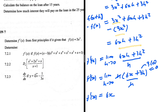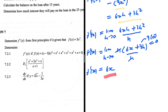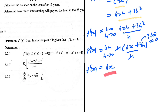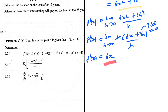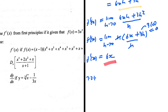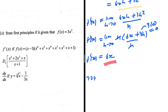This is the same answer we'd get using the power rule: 3 multiplied by 2 gives 6, subtract 1 from the exponent, giving 6x. So we're confident our first-principles calculation is correct. That is question 7.1.